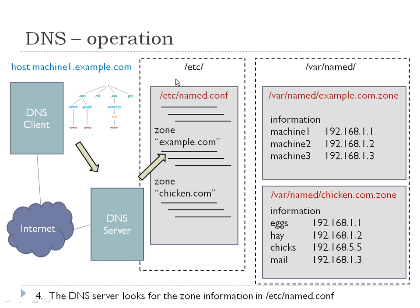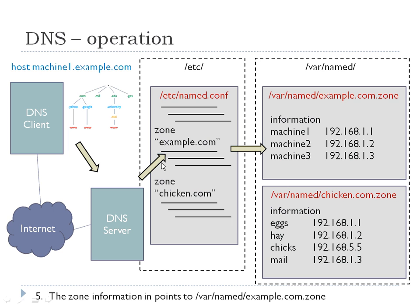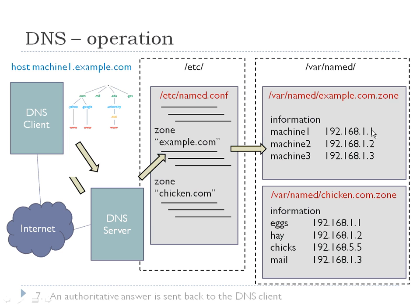Once it finds it, it's going to contact that DNS server and ask about 'www.example.com'. The DNS client sends a request to the server that has the SOA. Now in this server, in its '/etc' directory, it's going to have a 'named.conf', and it's going to look up and say, 'I have example.com — I can tell him something about it.' The zone declaration points it to '/var/named/example.com.zone', which has all of your records. It looks up 'machine1', finds it, and the DNS server sends back an authoritative answer about machine1.example.com.